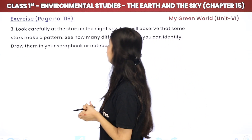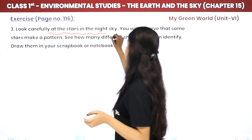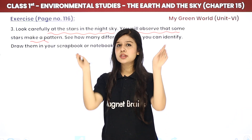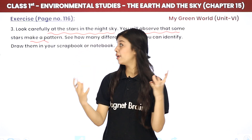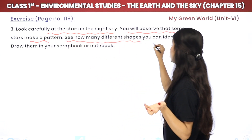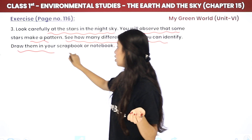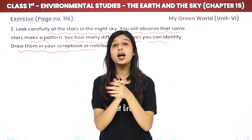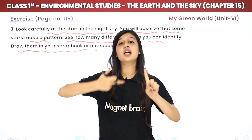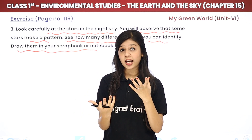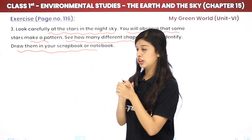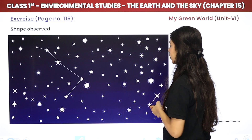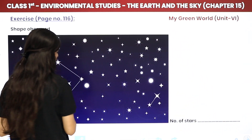Now the next activity: look carefully at the stars in the night sky. You will observe that some stars make a pattern. Kabhi kabhi lagta hai na ki koi stars koi pattern bana rahe hain, koi bhi shape bana rahe hain. See how many different shapes you can see — identify and draw them in your scrapbook or notebook. Hum kuch stars dekhenge aur kuch shapes hum khud bhi banayenge. Yahan pe aapko bohot saare stars dikh rahe hain.